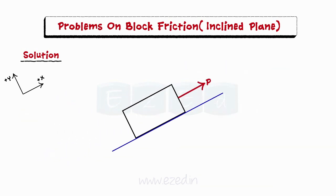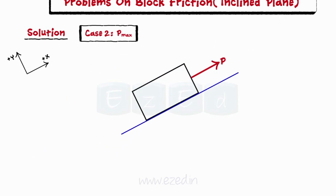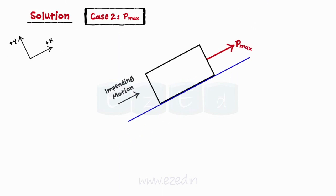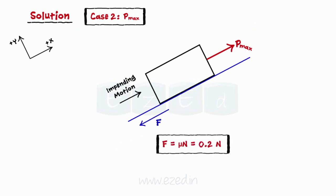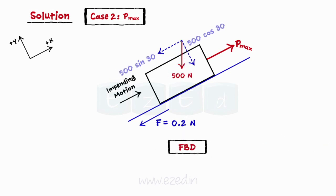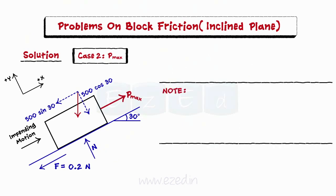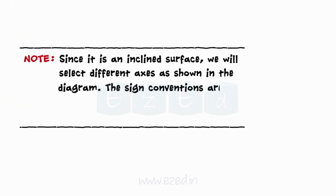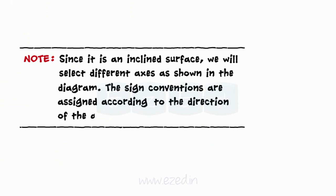Next, we will analyze the second case. The maximum value of the applied force for equilibrium, P_max, will just cause the block to move up the plane. The frictional force will therefore act downwards on the plane and is equal to 0.2 times the normal reaction. Let us now draw the free body diagram of the block, selecting different axes for the inclined surface. The sign conventions are assigned according to the direction of the applied force.